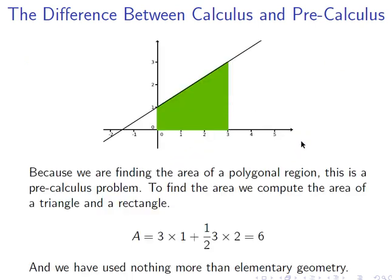We can just cut that area up into a triangle and a rectangle. So the area of that rectangle, it's three units wide and one unit high, so that's area three, and the triangle on top is three units wide and two units high. Base is three, height is two, so one-half base times height, and the area would be six. So we don't always need calculus to find areas.